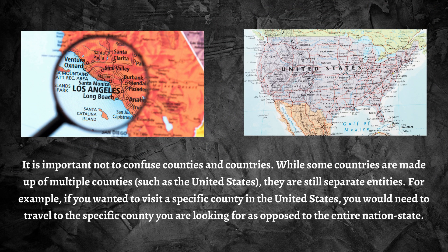It is important not to confuse counties and countries. While some countries are made up of multiple counties, such as the United States, they are still separate entities. For example, if you wanted to visit a specific county in the United States, you would need to travel to that specific county, as opposed to the entire nation-state.